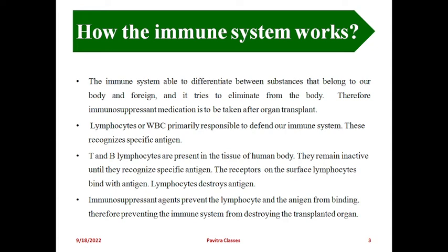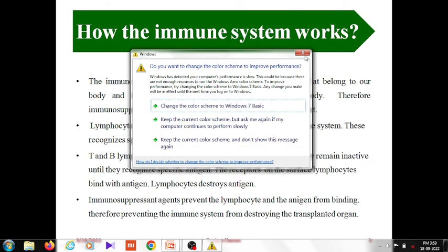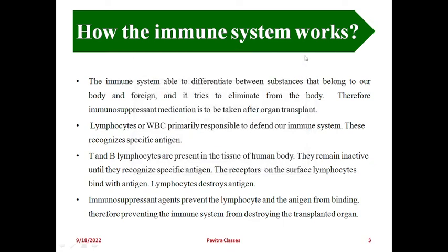Our immune system is able to differentiate between substances that belong to our body and foreign material. First it recognizes whether it is our body material or foreign material, and whenever it identifies something as foreign material, it tries to eliminate it from the body. This is why whenever organ transplant surgery is done, immunosuppressant medication is given - because when an organ is transplanted, the immune system treats it as foreign material, so immune suppression drugs must be given.